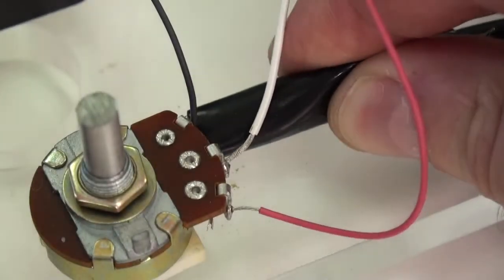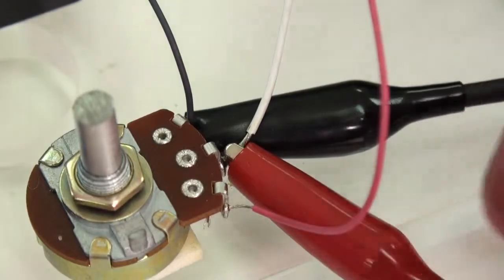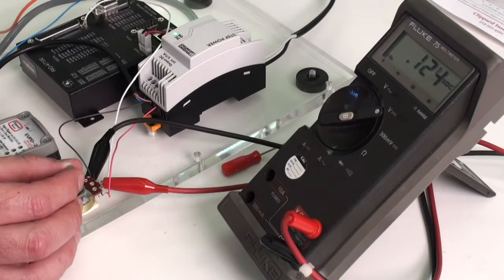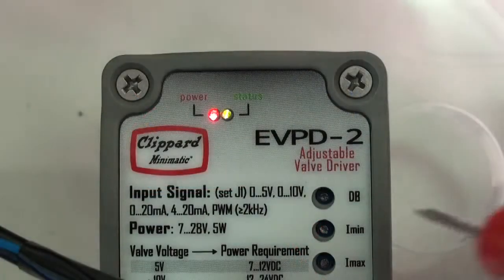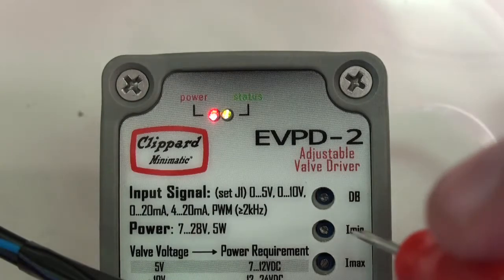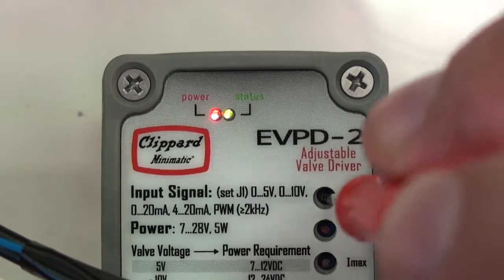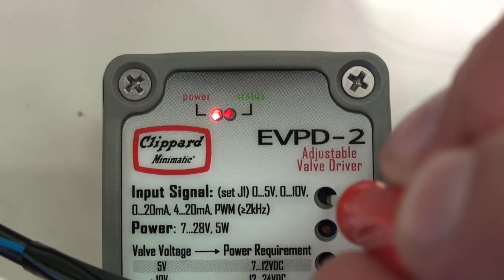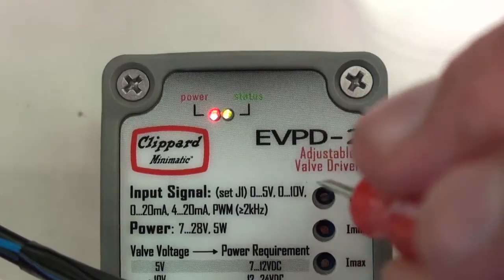So the first thing I want to do is to adjust the command voltage to the minimum voltage for which I'd like to see an output. In this case, let's say 0.1 volts. Now, I adjust the top potentiometer, labeled DB for deadband, clockwise, raising the command threshold until the green status indicator goes dark, at which point the threshold is higher than the signal that I am giving the driver. Then I will turn the pot counterclockwise just enough to get the status indicator to come back on, so we can move to the next step.